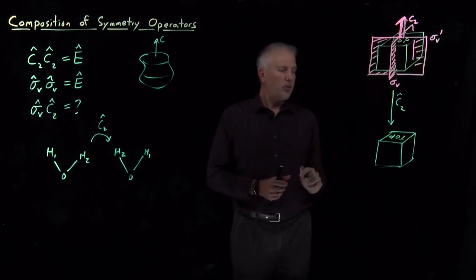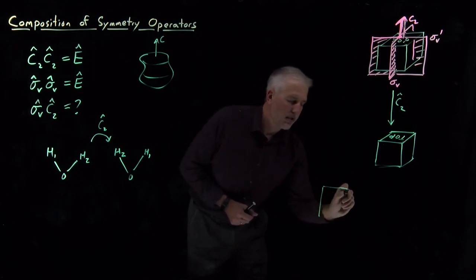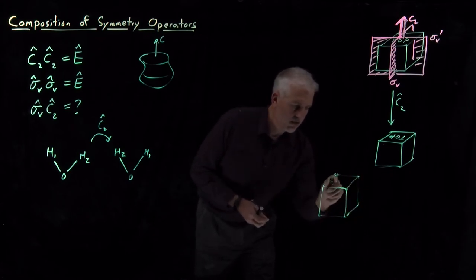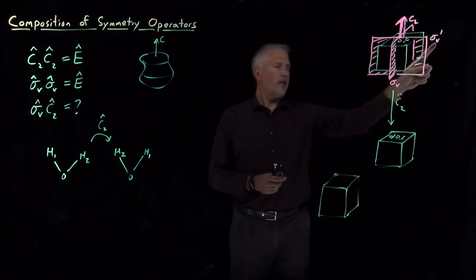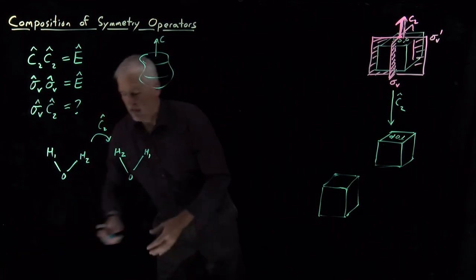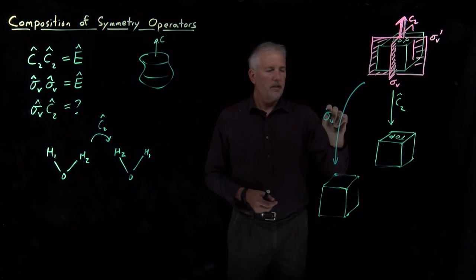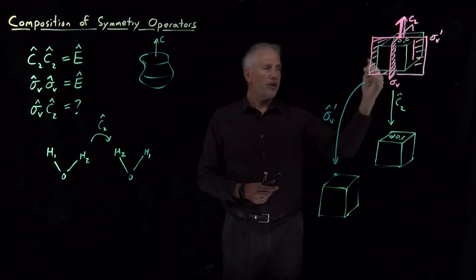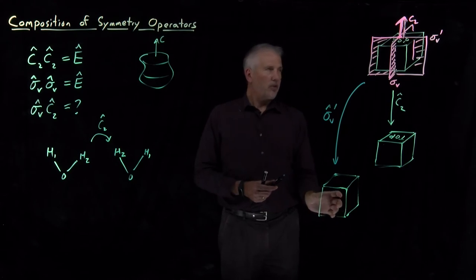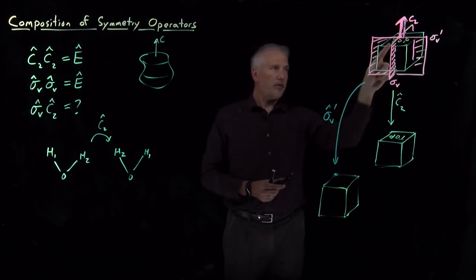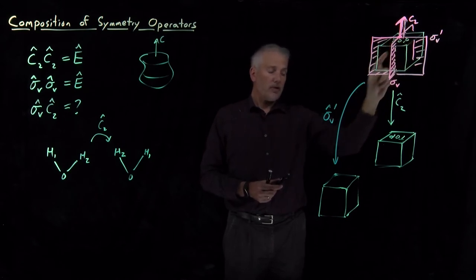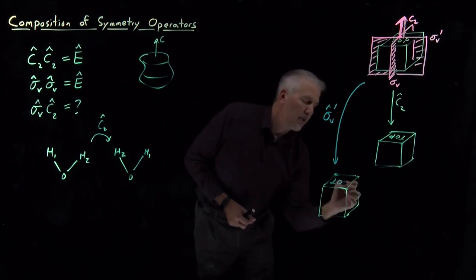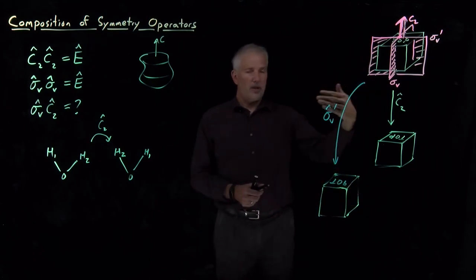Next, consider the sigma_v prime reflection, which reflects through the plane dividing the cube into front and back halves. Reflecting the front to the back and the back to the front leaves the cube looking like a cube, but the letters get reflected front to back. Instead of T-O-P written left to right with the letters right-side up, each letter is now reflected front to back — the T, O, and P all appear mirror-reversed in depth.